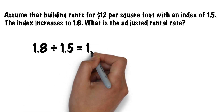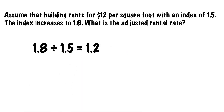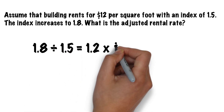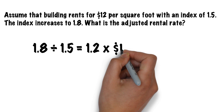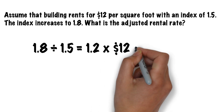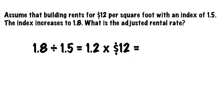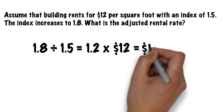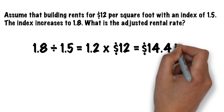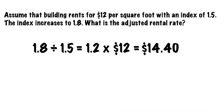Dividing 1.8 by 1.5 gives you 1.2. Then you're going to multiply that number by twelve dollars per square foot, which is the rent currently being charged, to give you the new rent of fourteen dollars and forty cents per square foot.